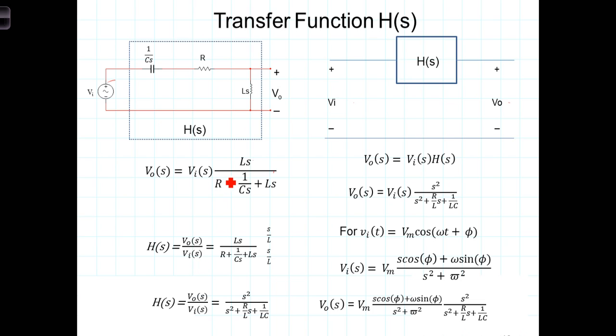So in this case here we're going to simply divide both sides of this equation by V in of S and call that H of S and what we have left is Ls over R plus 1 over Cs plus Ls.